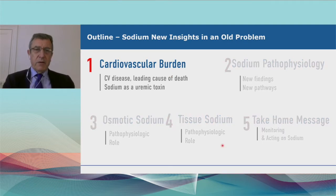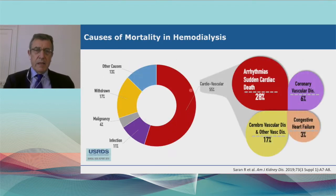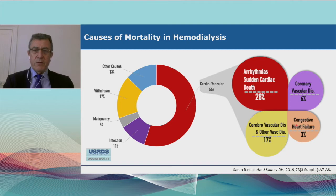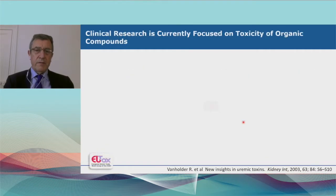Cardiovascular burden is a tremendous risk for dialysis patients. Taking US ESRD data as an example, almost two-thirds of dialysis patients die from cardiovascular disease — particularly arrhythmia or sudden cardiac death, but also from stroke, vascular disease, and congestive heart failure. Cardiovascular disease has a tremendous impact on the mortality of dialysis patients.